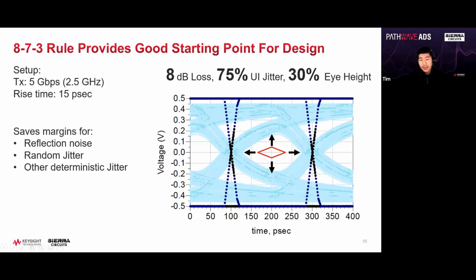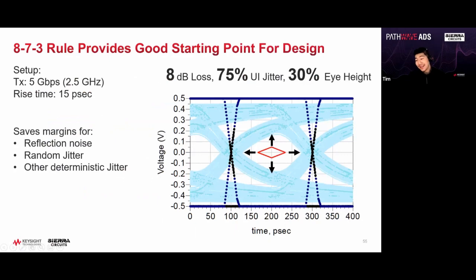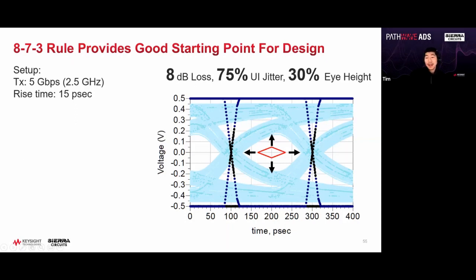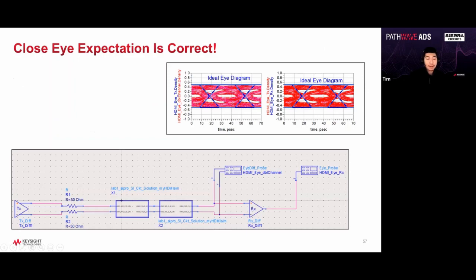ISI is contributing 25% of total jitter — 75% of UI eye width remaining — for this case based on ISI only. With 10 dB at Nyquist, based on our 873 rule expectation the eye should be closed. The simulation with the TX and two cascaded channels confirms it: the ideal eye is in blue, the red result is closed — exactly as expected.